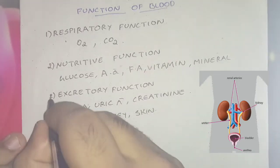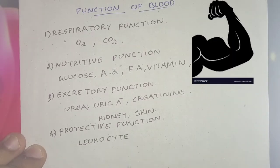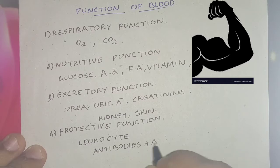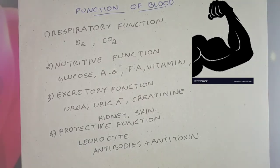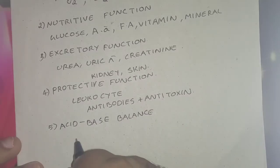are carried by blood to excretory organs like kidney and skin. Now for the next function, that is the protective function. The leukocytes protect the body from invading organisms. The blood also carries antibodies and antitoxins which are involved in defense mechanisms.